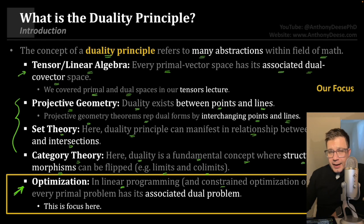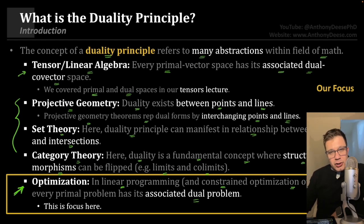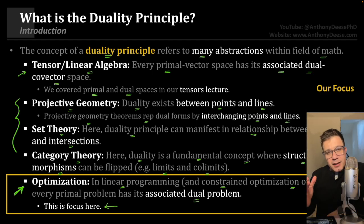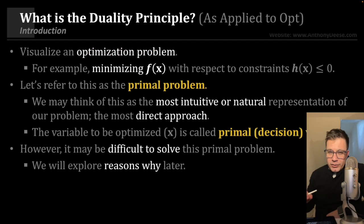In linear programming, or really any linear or nonlinear constrained optimization problem, we see that every primal problem — every primal representation — has its associated dual problem or dual representation. Perhaps this sentence doesn't have any meaning to you yet. Hopefully it will have meaning by the end of this module and definitely by the end of the next. So let's try to explain what that sentence meant.